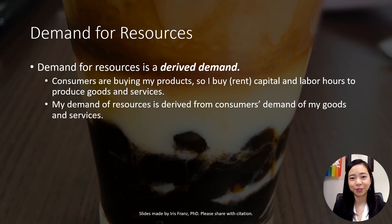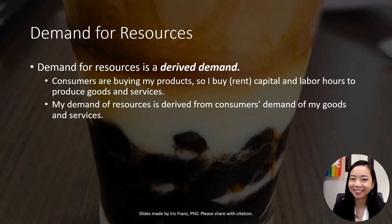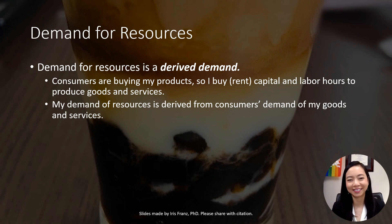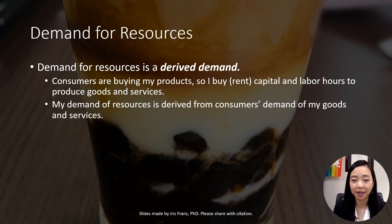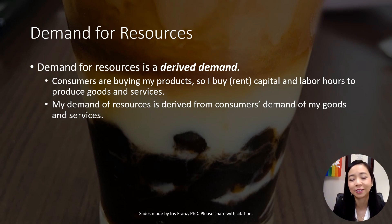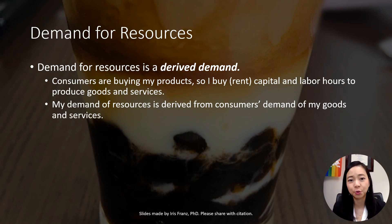The demand for resources is a derived demand. What does that mean? Consumers are buying my goods and services. In order to produce these goods and services to meet my consumers' demand, I buy, rent, or hire capital and labor hours to produce these goods and services. Therefore, my demand for resources is derived from consumers' demand for my goods and services.